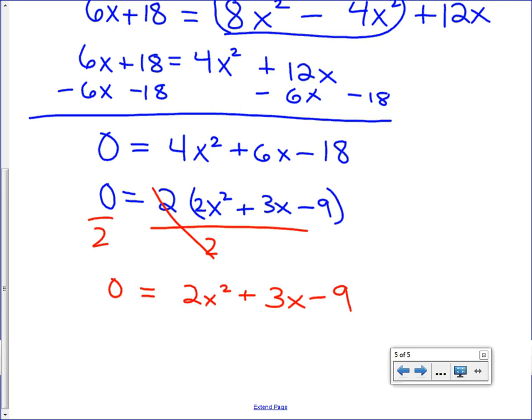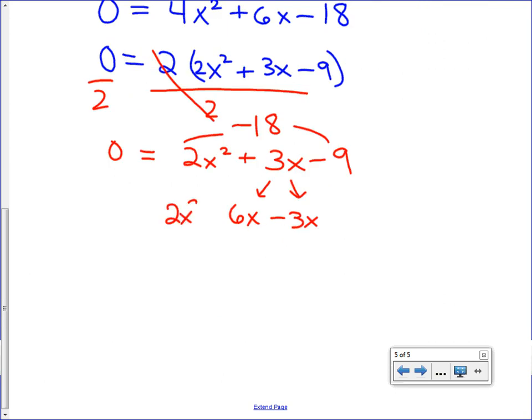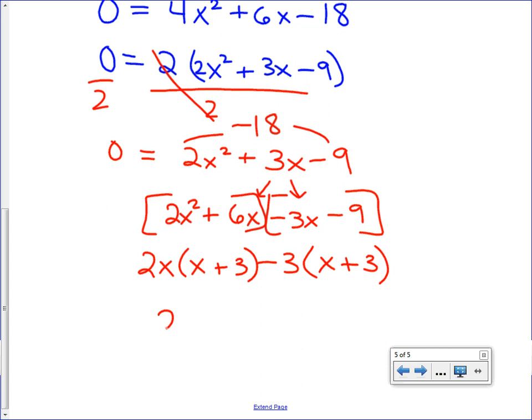Now to factor this, I'm going to multiply 2 times negative 9, negative 18. This is splitting the middle term. So what makes negative 18 that adds to positive 3? We're going to use positive 6x and negative 3x, because that would make negative 18 if you multiply, and it would make positive 3x by addition. Bring down our first term and our last term. We're going to factor by grouping. Take out a 2x, be left with x plus 3. Take out a negative 3, be left with x plus 3. That means one of our factors is 2x minus 3 and the other one is x plus 3. This whole thing equals 0. Solve each piece. x will equal 3 over 2 and negative 3.